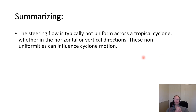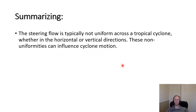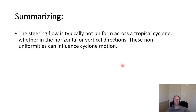In summary: the steering flow is typically not uniform across a tropical cyclone — neither horizontally nor vertically. Even a vertically weighted steering flow misses some effects from the vertical change that we haven't fully accounted for, and these non-uniformities can influence where and how the tropical cyclone moves. Additionally, if two tropical cyclones come within about 1500 kilometers of each other, they may weakly draw closer as they rotate around each other and around a common center of mass.